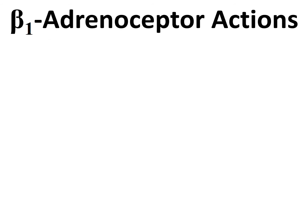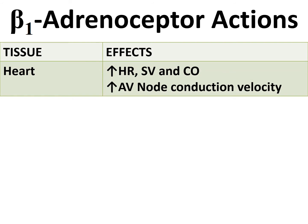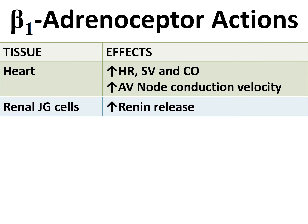Moving to beta receptors: there are three types — beta-1, beta-2, and beta-3. Beta-1 and beta-2 are pharmacologically relevant; beta-3 has limited pharmacological implications. The most important site for beta-1 receptors is the heart. Stimulation of beta-1 receptors increases heart rate, stroke volume, cardiac output, and AV conduction — producing positive chronotropic and inotropic effects.